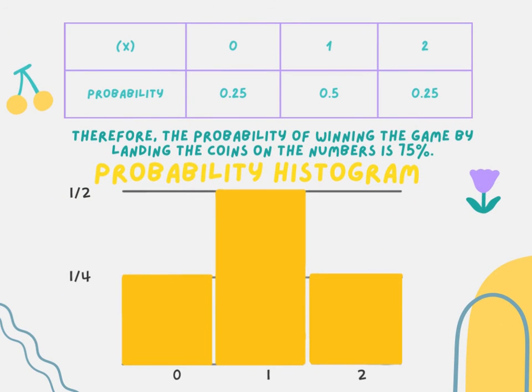Now that we have the decimals, we will add them and we will get 0.75. Therefore, the probability of winning the game by landing the coins on a number is 75%.